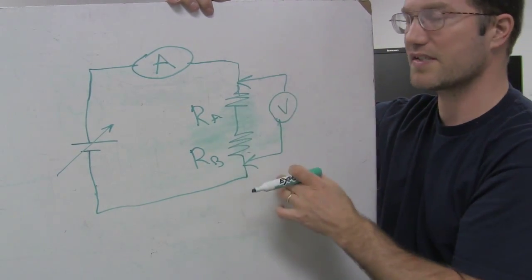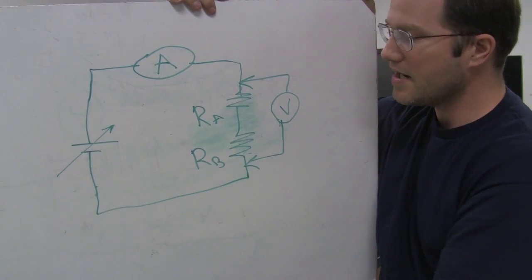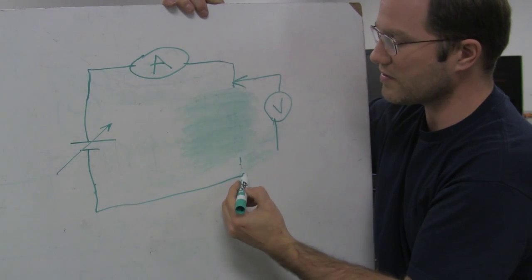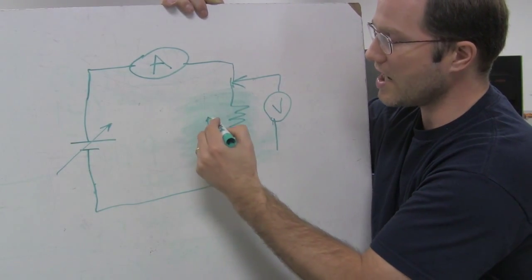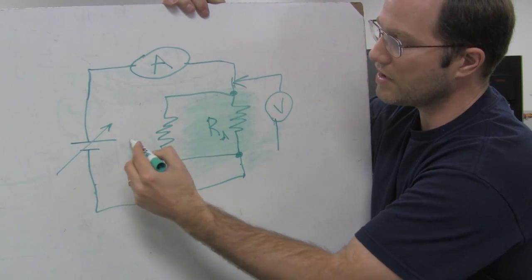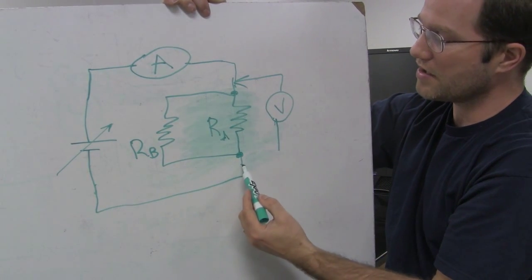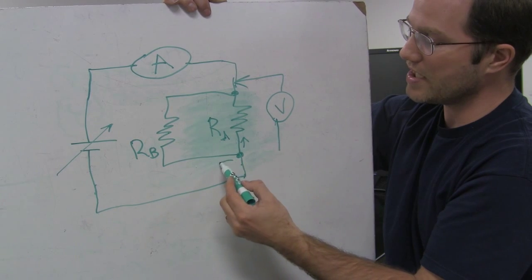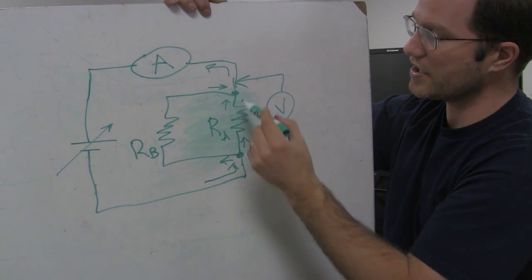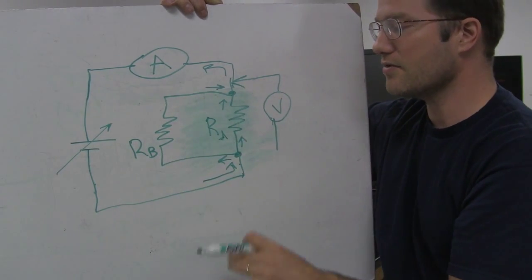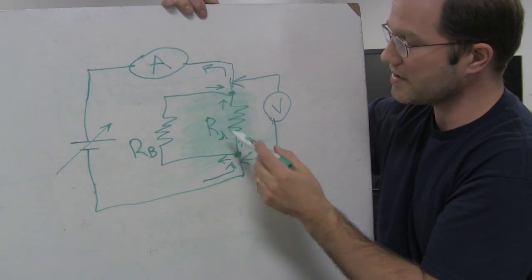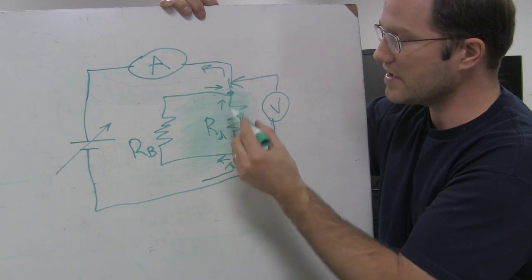I can measure the voltage across both resistors and see what the voltage is across both together. When resistors are in parallel, the current can make a branch and go in two different directions. The current hits a junction and splits up between A and B, then recombines on the other side. Because the ends of each resistor are tied together electrically, they're considered to be in parallel. The voltage across RA is the same as reading it across both, since these two points are the same point electrically.